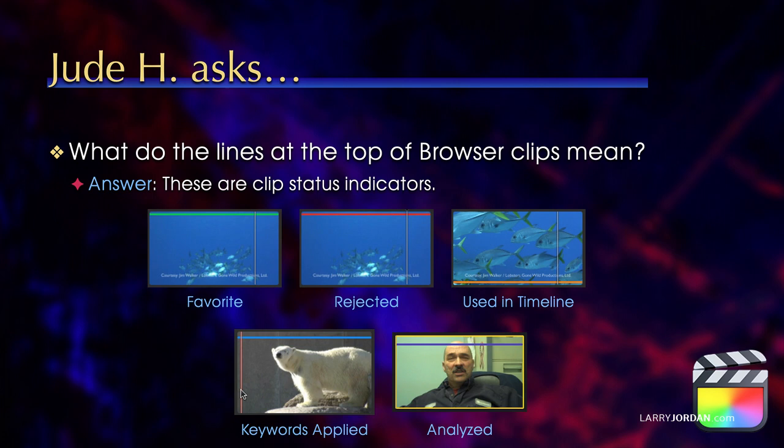These are clip status indicators. If there's a green bar at the top of a clip or a segment of a clip, it indicates that it's a favorite — what we used to call selects. If there's a red bar, it means it's rejected; we don't want to use that clip or that portion of a clip.